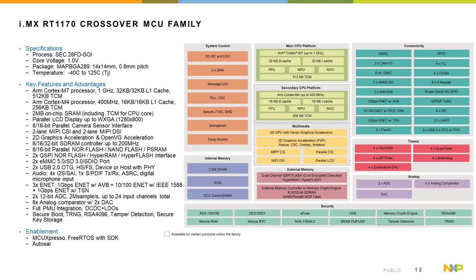Looking closer at the i.MX RT1170 crossover MCU family, the key things to note include the dual core and on-chip RAM, with the Cortex-M7 running up to 1 GHz and an additional power efficient Cortex-M4 running up to 400 MHz, an additional multimedia subsystem for graphics display and camera interfaces including parallel and MIPI LCD interface displays as well as MIPI CSI, and a 2D GPU with vector graphics support and an additional pixel processing pipeline. The device also includes two 1 gigabit ethernet with AVB and TSN support, a PDM microphone interface with hardware voice activity detection for wake word detection, and two low power high performance ADCs as well as a 12-bit DAC.